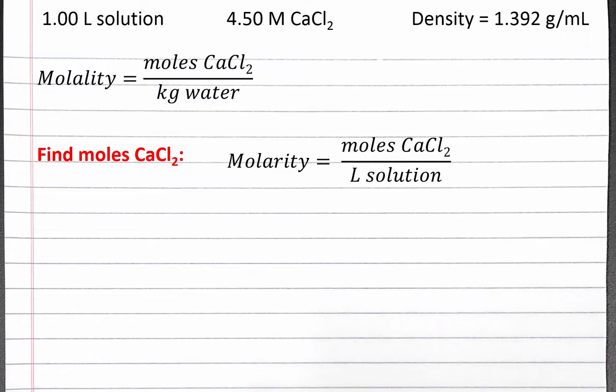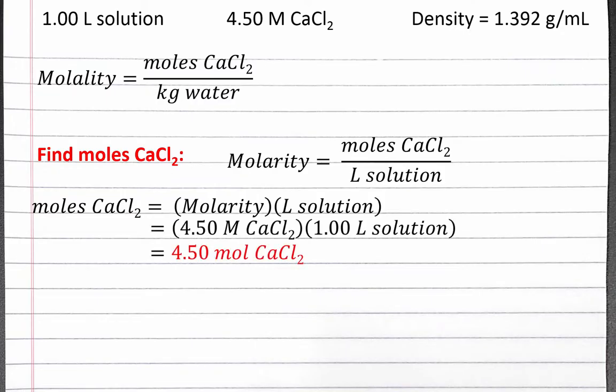So we can rearrange our molarity equation to solve for moles of calcium chloride. Moles calcium chloride will equal the molarity times liters of solution. Our solution is 4.5 molar calcium chloride and we assumed one liter of solution, so we have 4.5 moles of calcium chloride.